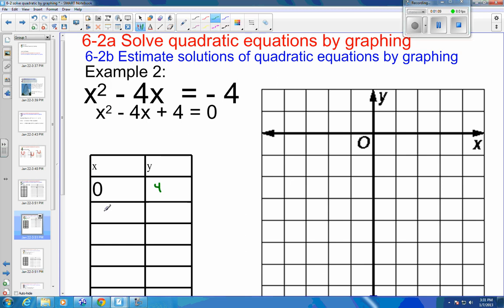And then we can try 1 and see what 1 looks like. So this is going to be 1 squared minus 4 plus 4. And so 1 minus 4 plus 4 would be 1.